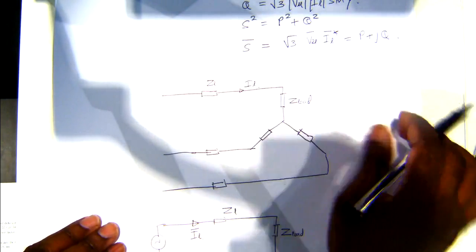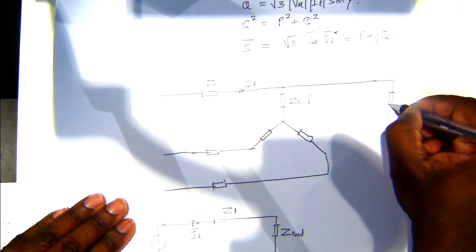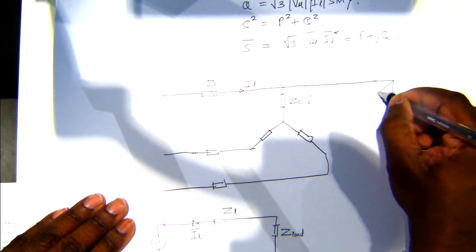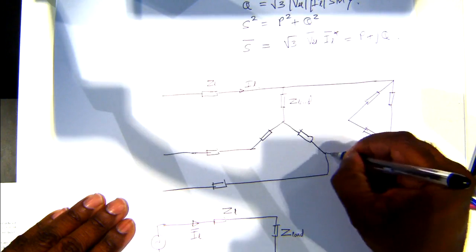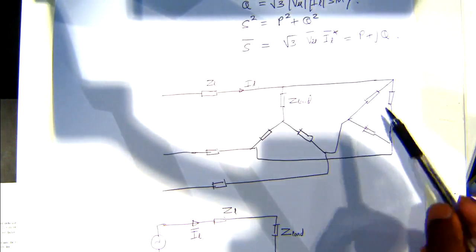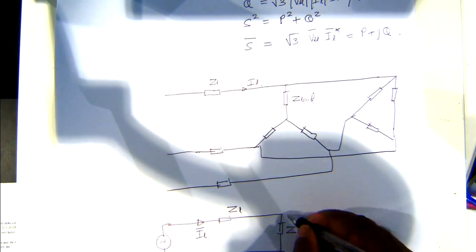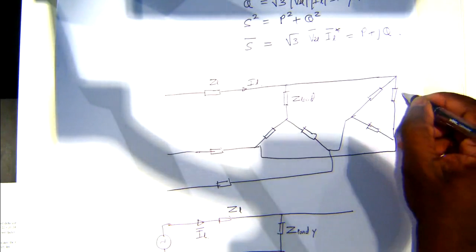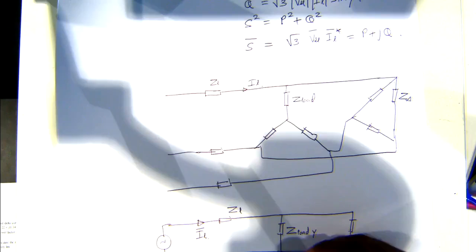If you have a delta-connected load, you should apply the star-delta transformation and convert it to a star equivalent. If you have a delta-connected load here, you should be able to convert this to a star equivalent and get a representation like this. This is the star load and this is the delta-connected load.